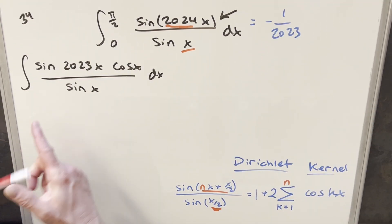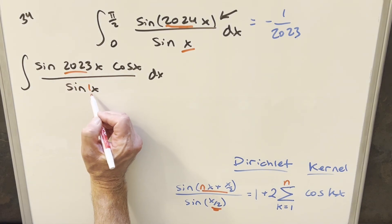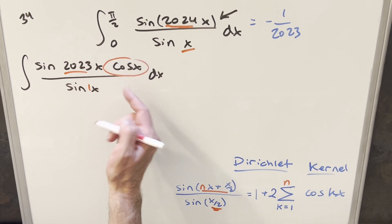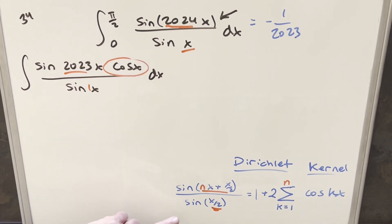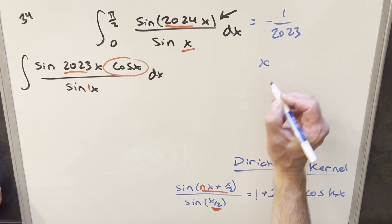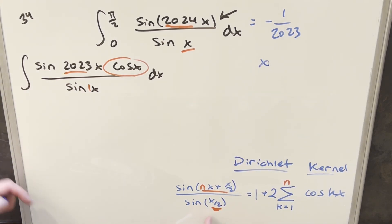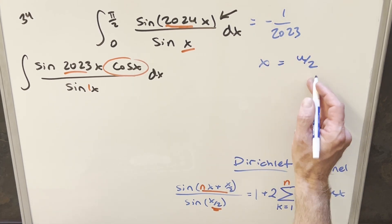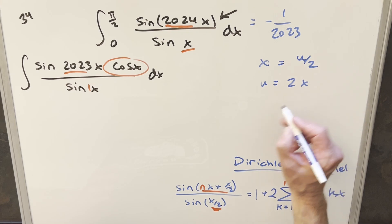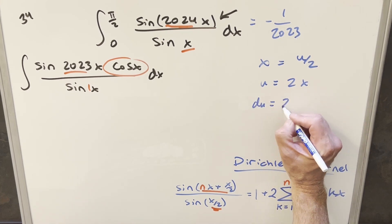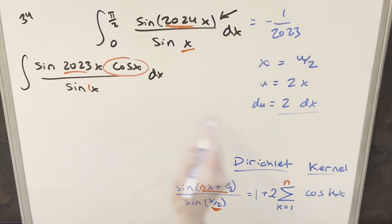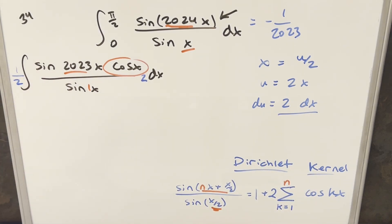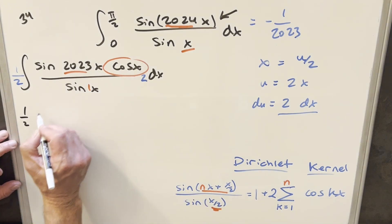Now for this other integral, we've fixed it so we have odd coefficients, which works well with the Dirichlet kernel formula when we do a u-substitution. But we've introduced another problem — now we've got a cosine in it. What I can do is try to get this into the Dirichlet kernel form using a u-substitution. Specifically, I want x to become x over 2, so if I let x = u/2, that's going to make the denominator work. Then u = 2x, and du = 2 dx. I'll multiply by 2 and 1/2 to set up the substitution without changing anything.